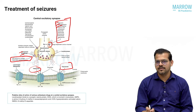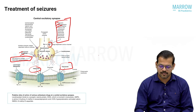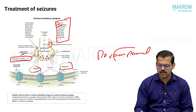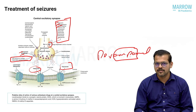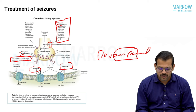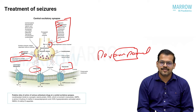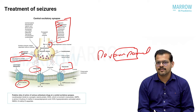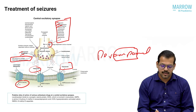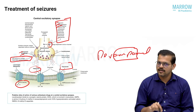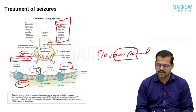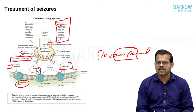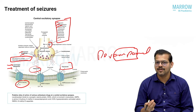AMPA is the other receptor where glutamate attaches. Topiramate is one drug that inhibits AMPA transmission. Another newer drug that inhibits AMPA transmission is perampanel — easy to remember because 'ampa' is in the name itself. There is another channel called HCN, which is unique because it can act as both inhibitory and excitatory. Two drugs that modulate HCN channels are lamotrigine and gabapentin.